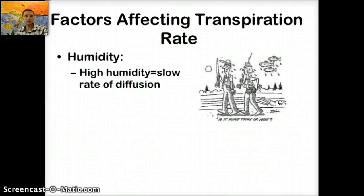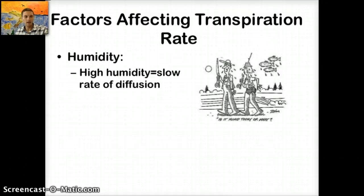There are different factors that affect the rate of transpiration. The first is humidity. If humidity is high, it's going to be a slow rate of diffusion, so evaporation off the leaves is going to be much slower. High humidity causes a non-steep concentration gradient between the interior and exterior of the leaf, so the diffusion or loss of water occurs more slowly.